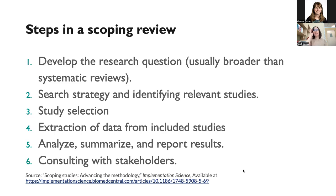The general steps in a scoping review include developing a research question. A lot of thought is given to the scope of the research question — scoping review questions do tend to be broader than a systematic review question, which is generally very narrow. You can ask a slightly broader question, but you still need to really think about your concepts, how you're defining them, and where the boundaries of your question are — what would be included or excluded from your review.